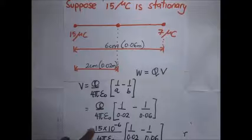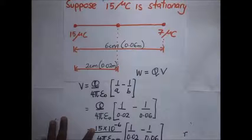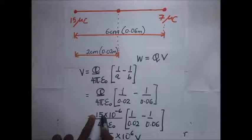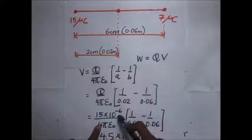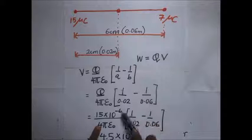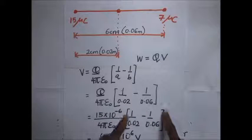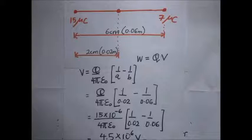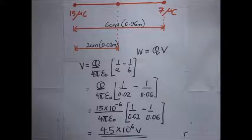We use the fact that 1 over 4πε₀ equals 9 × 10⁹ according to experimental observations. So 15 × 10⁻⁶ times 9 × 10⁹ into the bracket gives us the potential difference V.